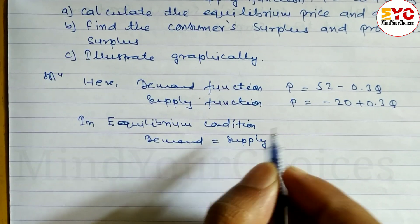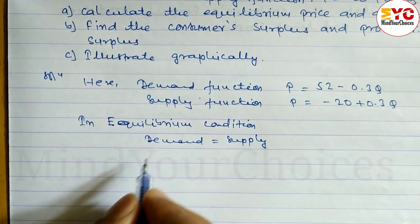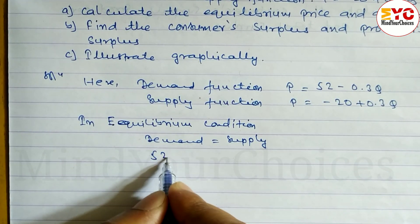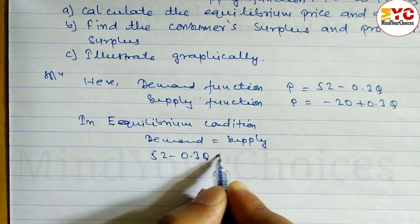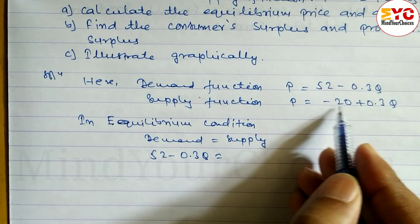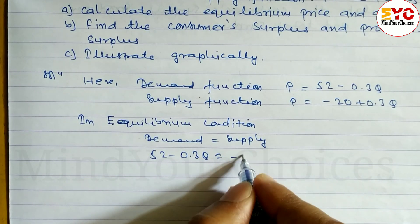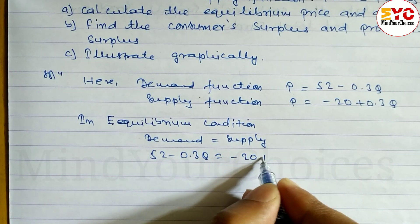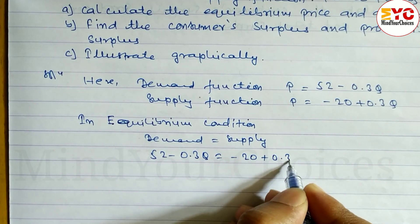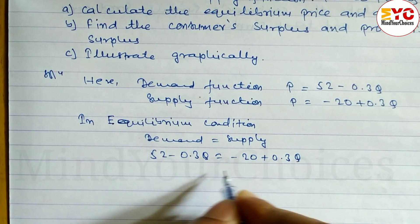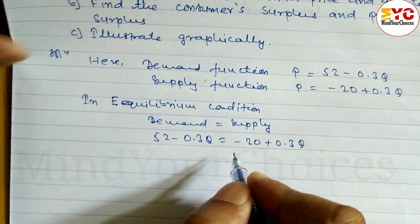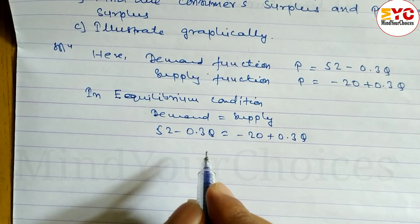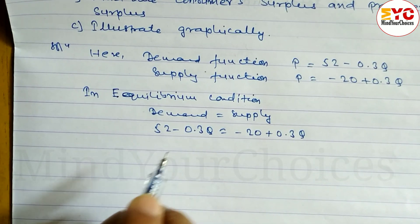What is the demand function here? 52 minus 0.3Q is equal to the supply function, minus 20 plus 0.3Q. Now we just have to solve this and we can get the value of Q.